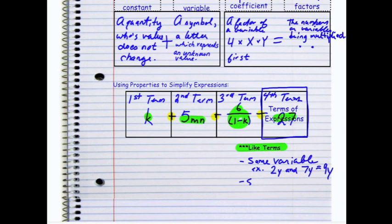They also need to have the same power. So for example, 3X squared and 4X squared have the same power. So that gives me 7X squared. So they must have the same variable or variables. They could have more than one variable and the same power.